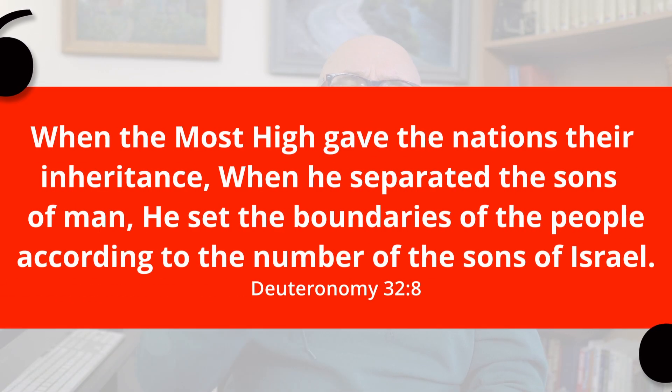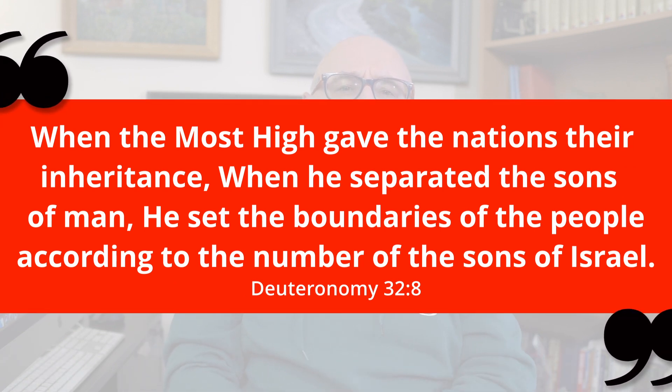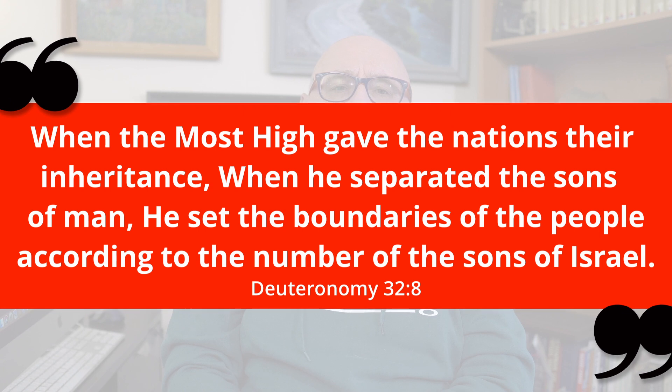When we read Deuteronomy 32 verse 8 in our modern Bible translations, it tells us that when God established the nations, he set their boundaries according to the number of the sons of Israel. It's difficult to know what this verse is referring to. How could the borders of other countries be based on the descendants of the patriarch of Israel? That doesn't really make sense, and that's not even taking into account that when God created the nations in Genesis chapter 11, Jacob — who was later renamed Israel — hadn't even been born yet.